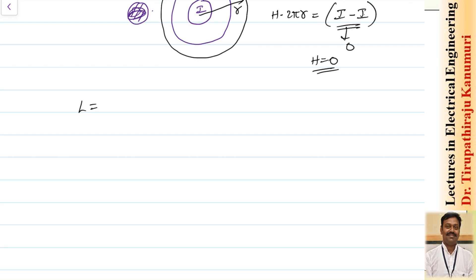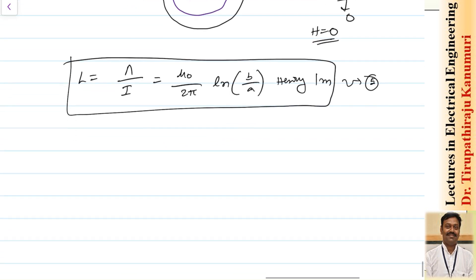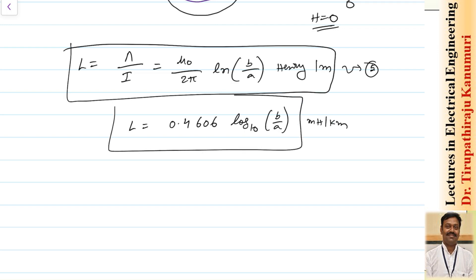The inductance is flux linkages per unit current: L = Ψ/I = (μ₀ / 2π) ln(b/A), in Henry per meter. This is equation 5. In power systems, where transmission lines are measured in kilometers, this can also be written as 0.4606 log₁₀(b/A) milli-Henry per kilometer.